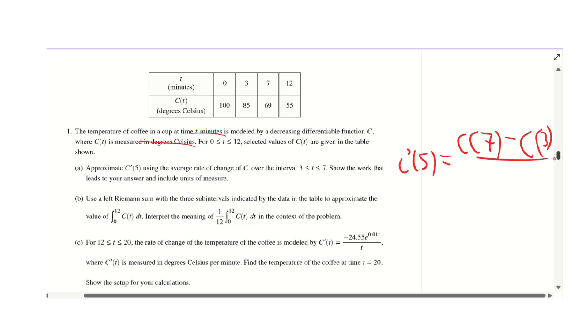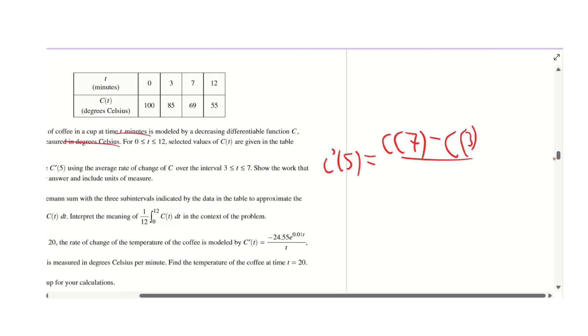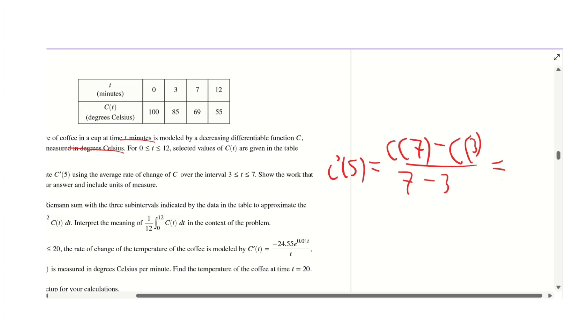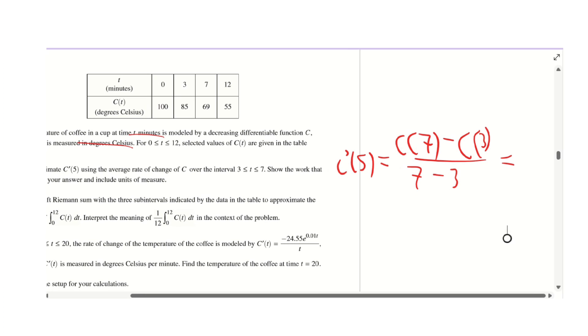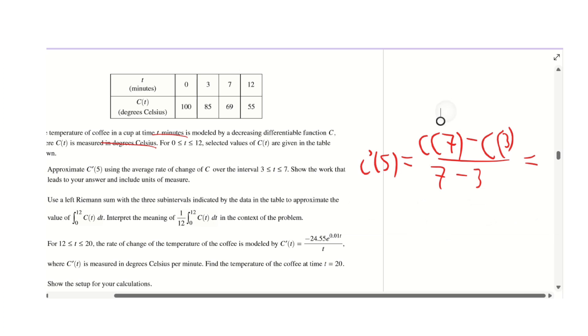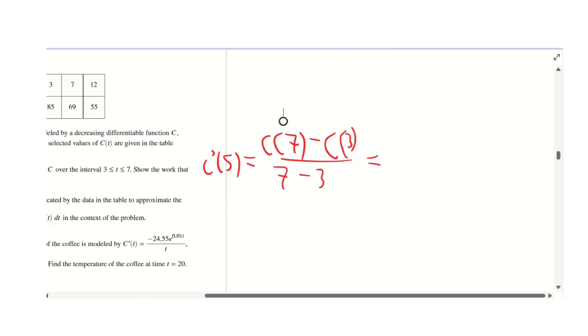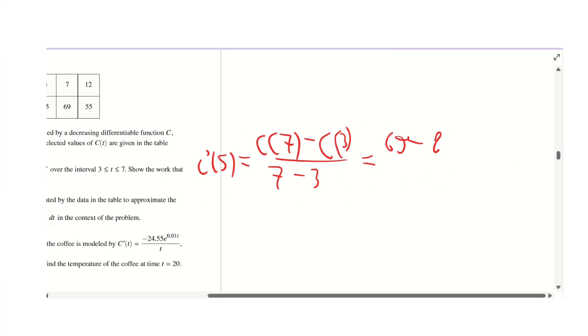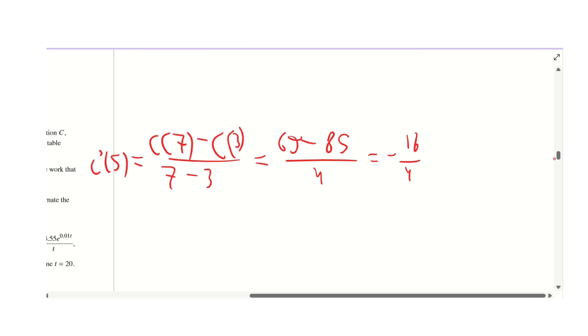This one's pretty easy, you just set it up where you say change in y over change in x using your points at C(7) and C(3), so you're doing the y values over the x values, basically finding the slope. That gives you C(7) - C(3) over 7 - 3, which is 69 - 85 over 4, which equals -16 over 4, which is -4.